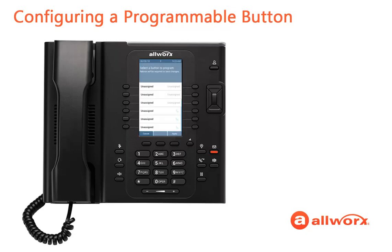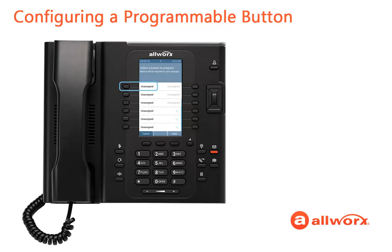Now you can select which programmable button you want to configure. The black, unassigned buttons on the left indicate the AllWorks administrator has given you permission to configure these programmable buttons, while the gray, unassigned buttons on the right indicate you do not have permissions to configure them. Let's select the top left programmable button.